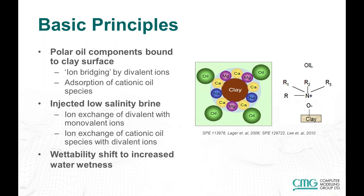Basic principles: first of all, the polar oil components are bound to the clay surface, making the rock more oil-wet. This picture shows how it may look on a molecular level — the oil being bound to the clay with ion bridges in between the clay and the oil, composed of magnesium, calcium, and sodium. Once the low salinity water is injected, it causes ion exchange, with sodium exchanging with calcium, which would reduce this ion bridge and release some of the bound oil particles, resulting in a lower SORW and a shift to more water-wet conditions.